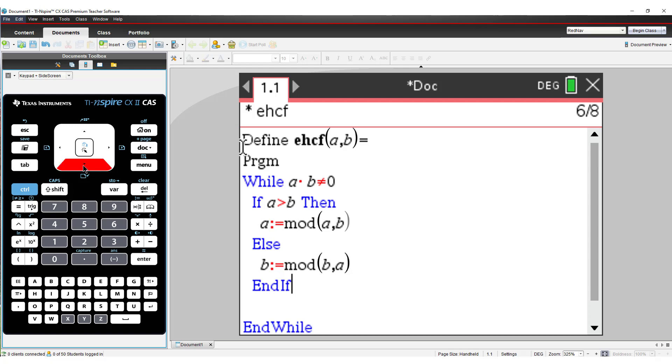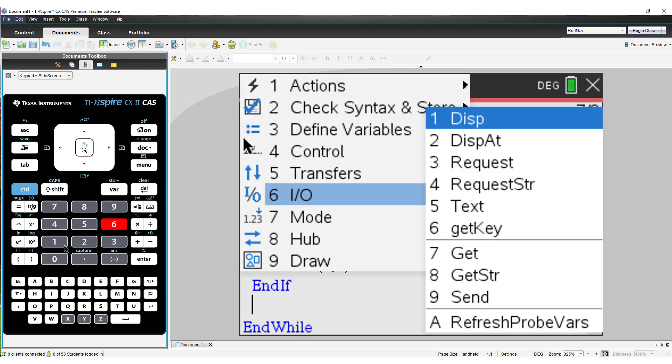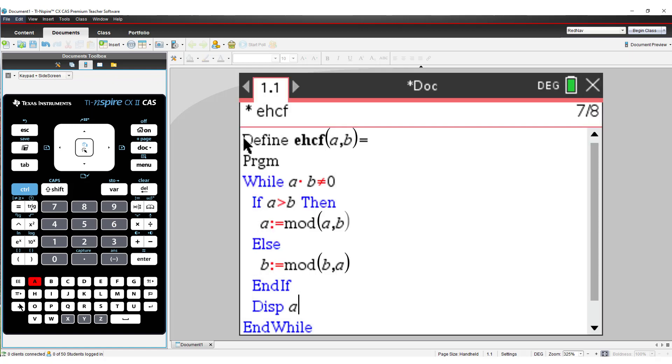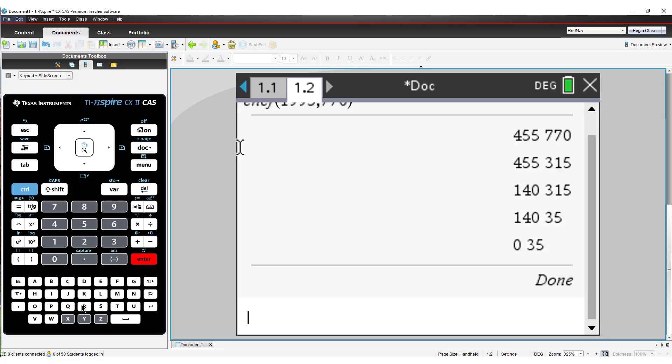And that is the entire algorithm. All that remains is to display the highest common factor. We can display the calculations as they progress through the loop. Now, let's test the program with our original numbers. The output shows the results much the same as what we obtained manually.